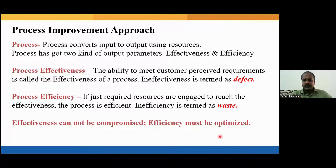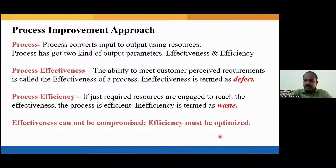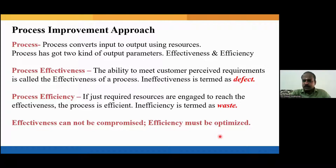When a process converts input to output, if the output has non-conformances — for example, a certain feature of the product is not meeting the customer requirement — it is called process ineffectiveness. However, if the output exactly meets the customer requirement, it is called process effectiveness. This ineffectiveness is termed as defects, so Six Sigma is all about improving process effectiveness and defect reduction.